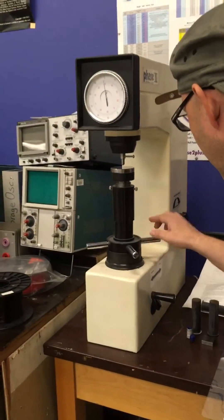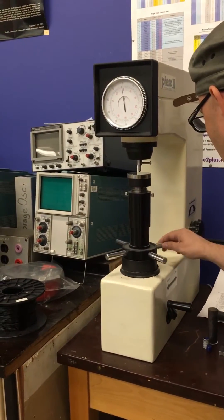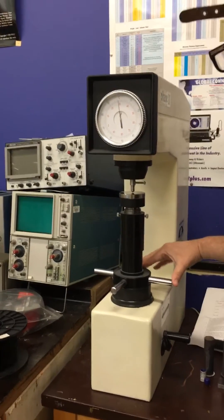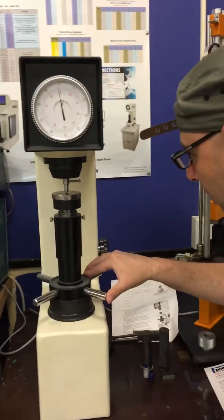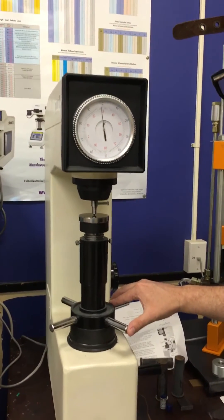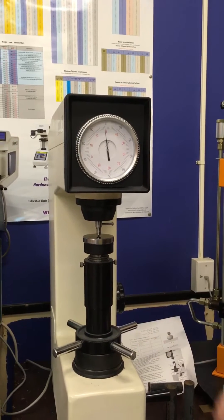And we then adjust the anvil such that it just makes contact with the sample. And we can tell that by looking at the needle. As soon as we make contact, it'll move. And there it is.